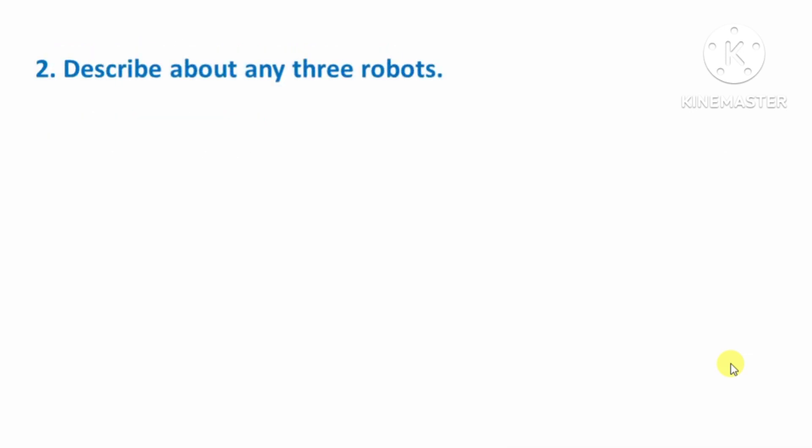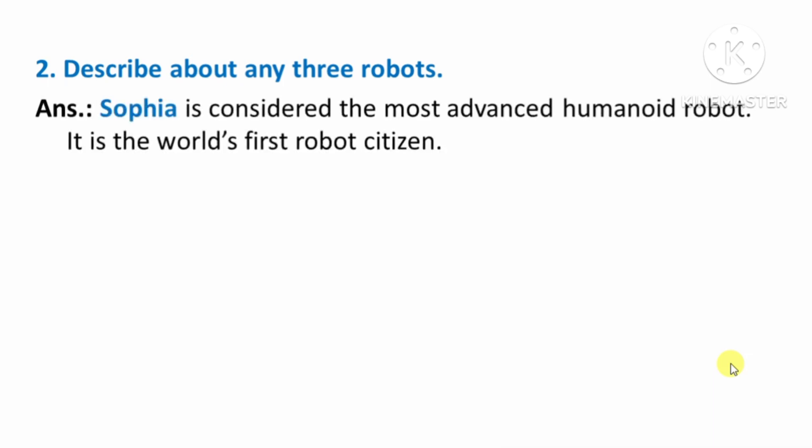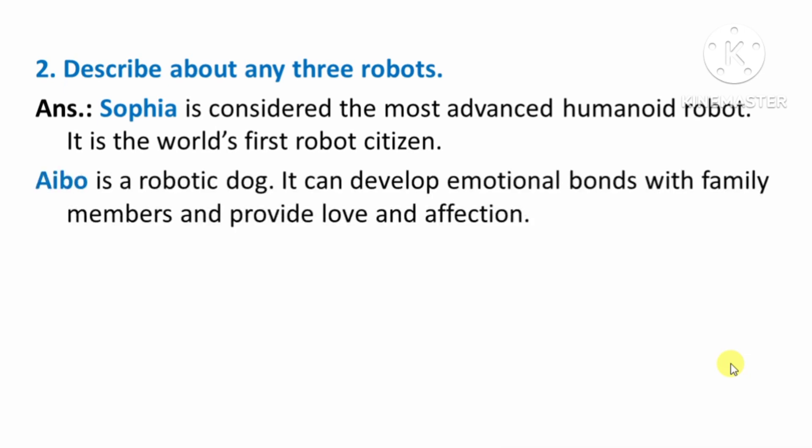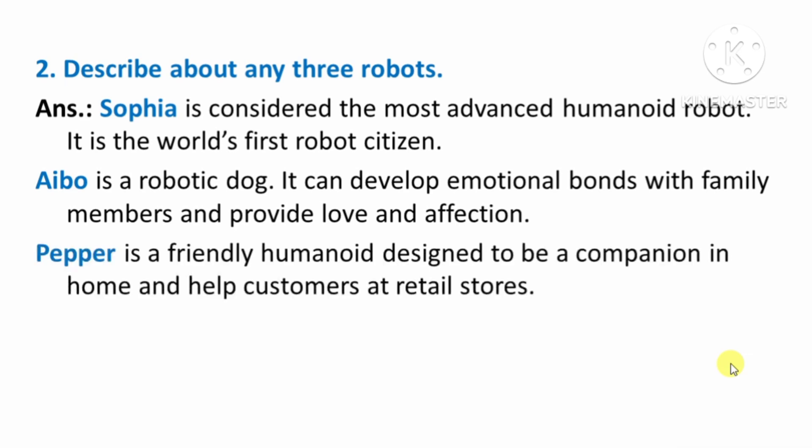Next question: Describe any three robots. First, Sophia is considered the most advanced humanoid robot. It is the world's first robot citizen. Second, Aibo is a robotic dog. It can develop emotional bonds with family members and provide love and affection. Third, Pepper is a friendly humanoid designed to be a companion at home and help customers at retail stores.